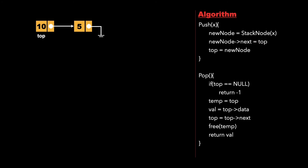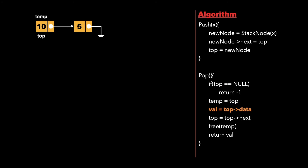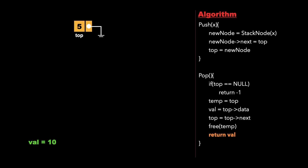Now let's look at the pop function. First we check if top is equal to null; if so, we return minus 1. Since that's false here, we create a temporary pointer pointing to top, and an integer val to store top's data, so val equals 10. Then we make top equal to top's next, so top now points to 5. We free the node pointed by temp, freeing node 10, and return val which is 10.